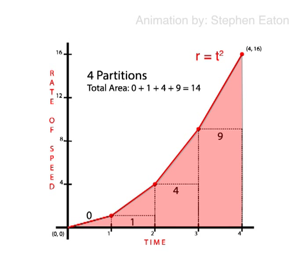In our first example, we use just four partitions, or rectangles, and we get a total area of 14. The total area is obtained by adding the area of all the rectangles. For example, our first rectangle has an area of 0. Our second rectangle, from time 1 to time 2, has an area of 1. Our third rectangle has an area of 4, and our fourth rectangle has an area of 9. Add these together and we get the total of 14.